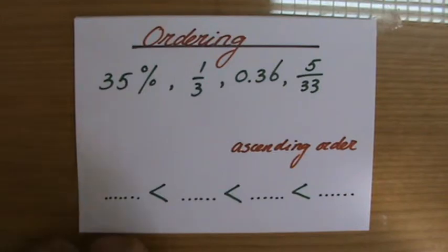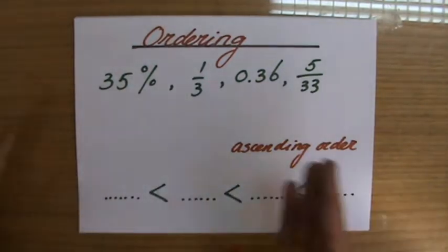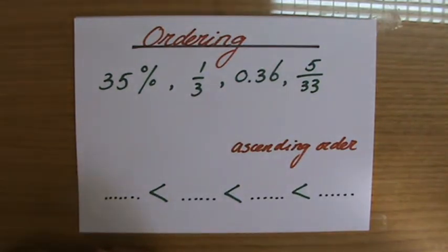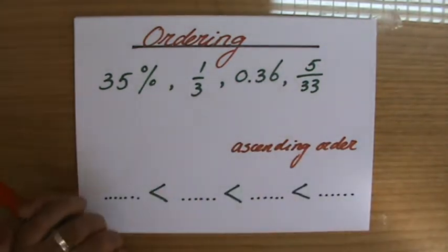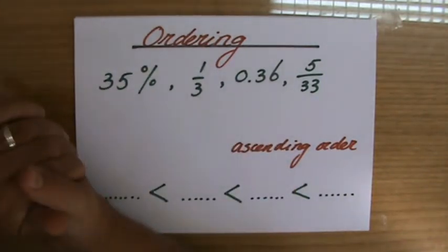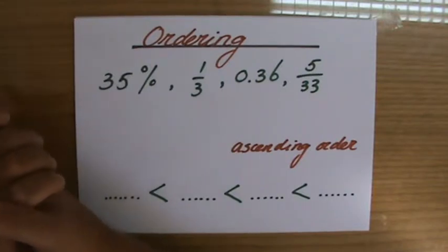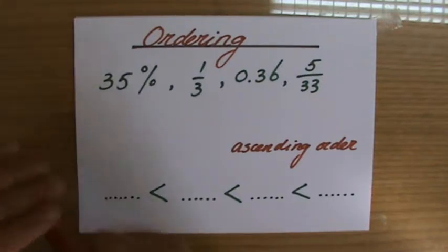How do I approach this? How can I compare these numbers? A useful thing to do is to either write them all as percentages, write them all as fractions, or write them all as decimals. In my experience, most students prefer to write them all as decimals.